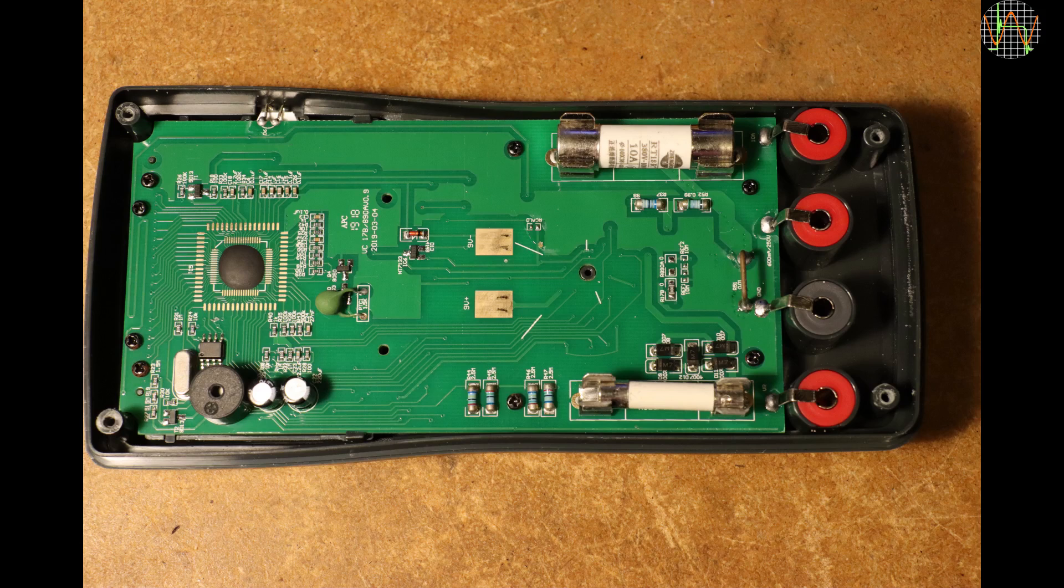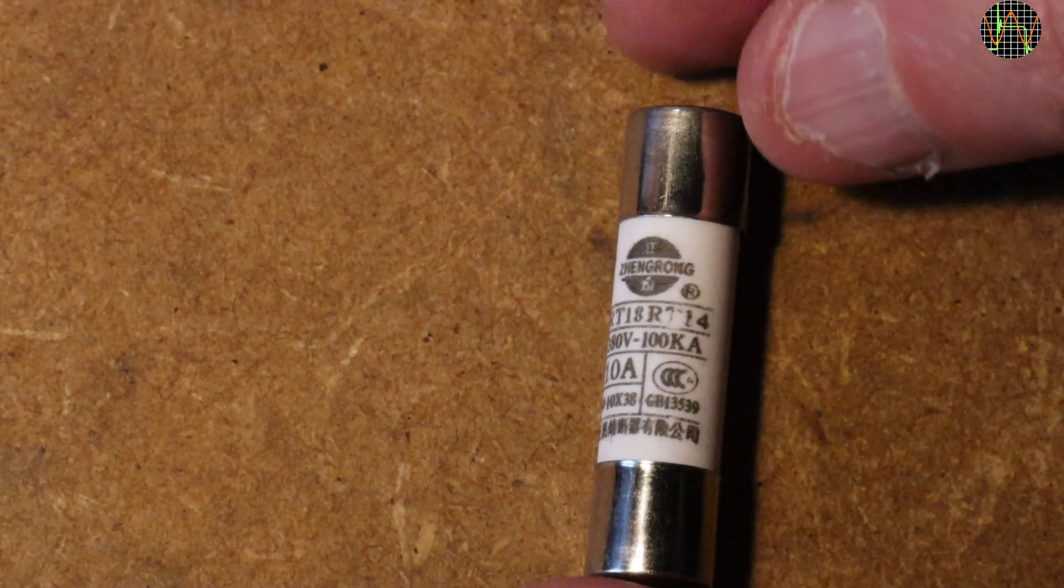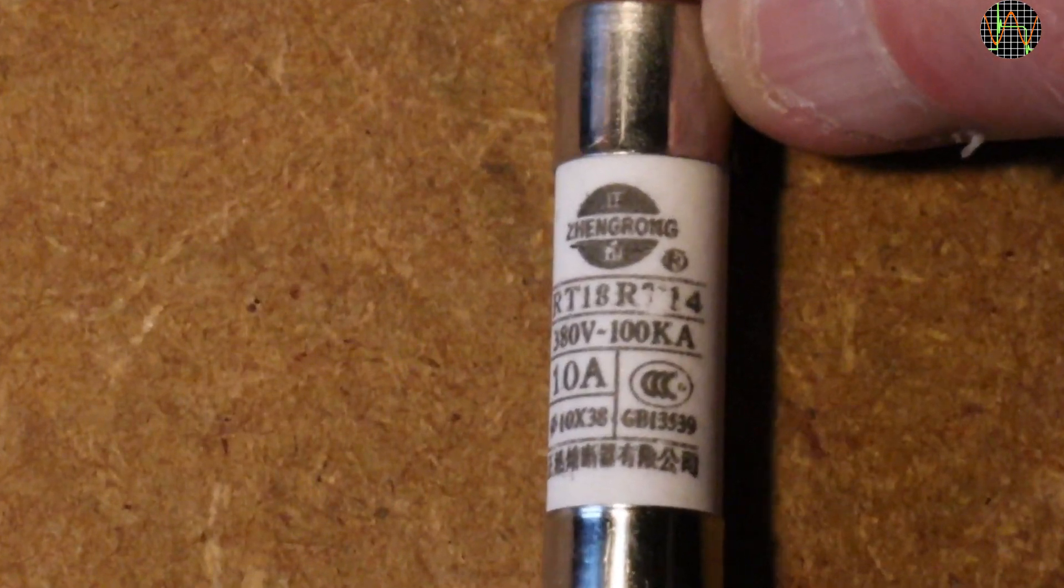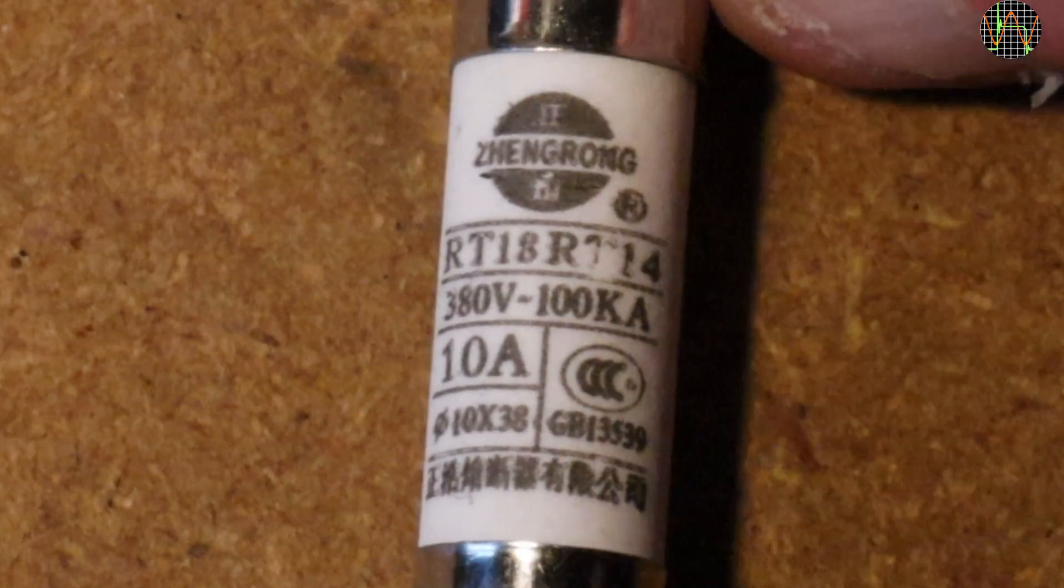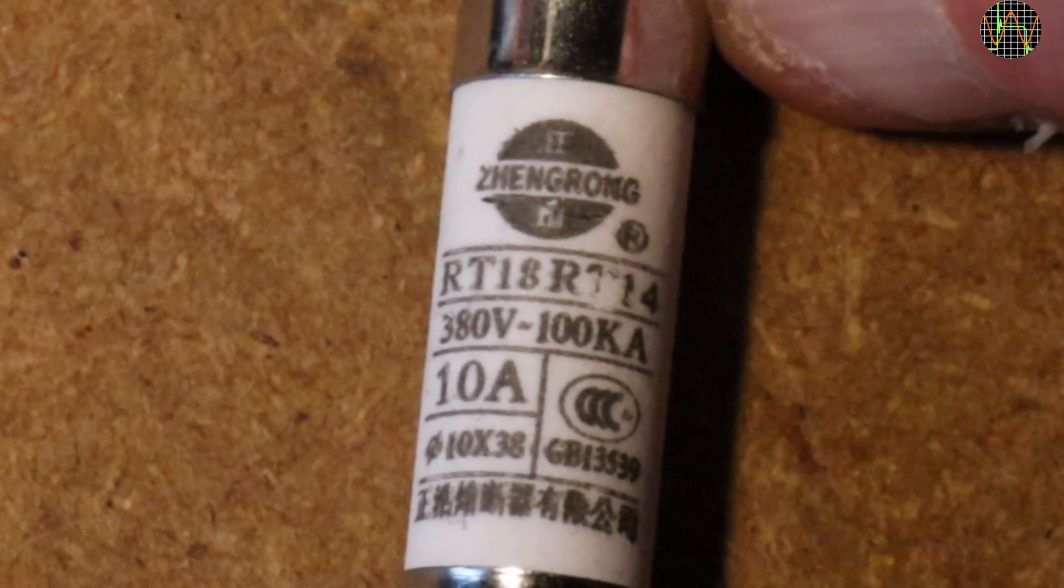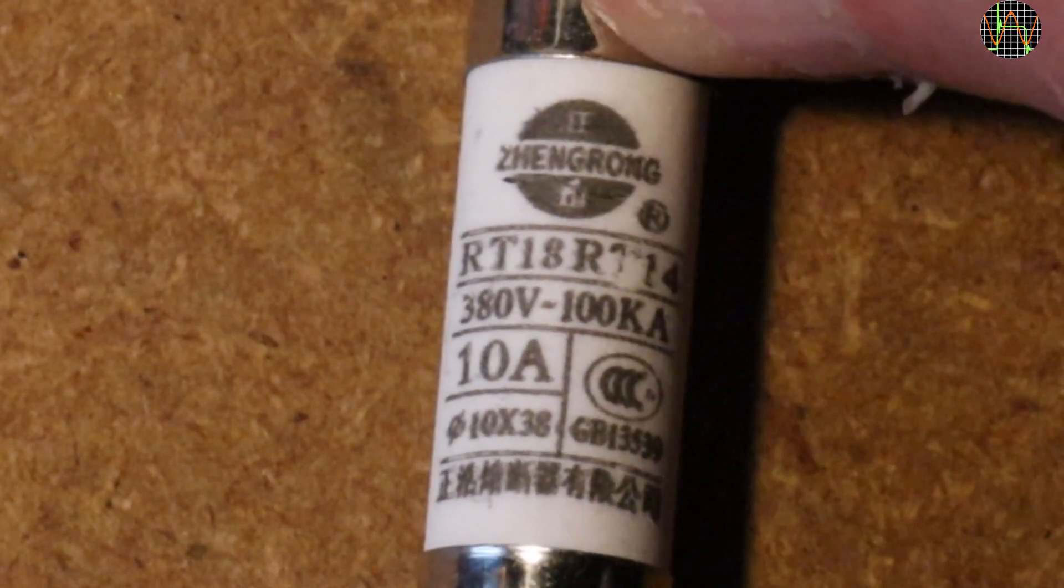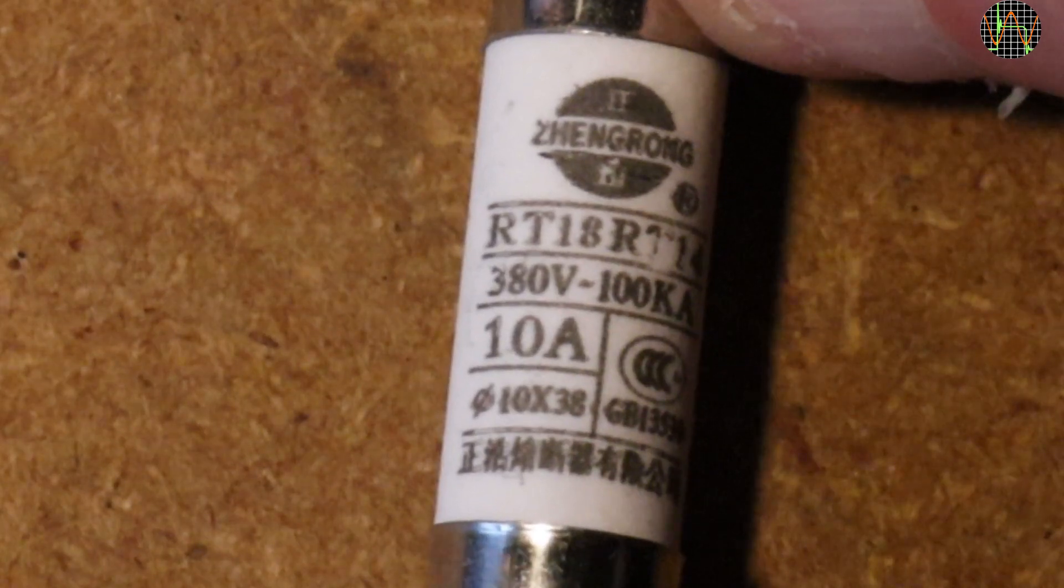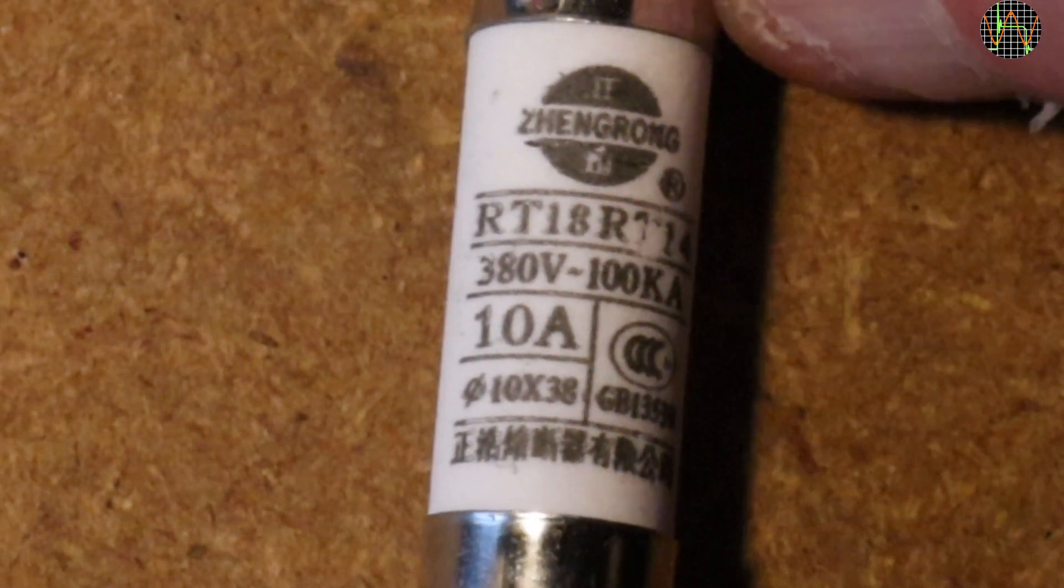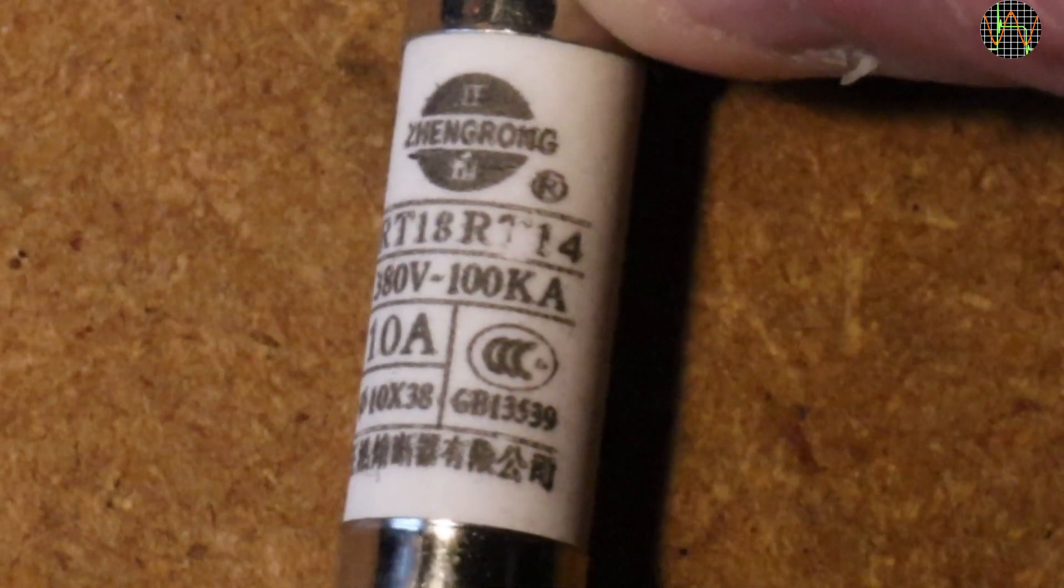A 10A Busman branded fuse from a proper distributor costs about half what I paid for the whole meter. Okay, Zeng Rong isn't a name I am familiar with and it isn't rated for 1000V, only for 380V but that's more than the 250V the manual advertises. 100kA breaking capability seems a lot. The Busman fuses I used have only 10kA. Zeng Rong is a proper manufacturer and has a website in Chinese.